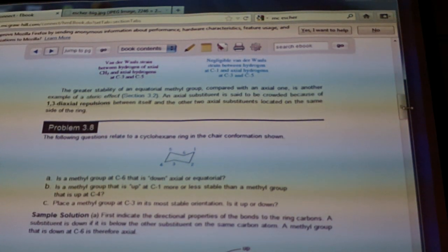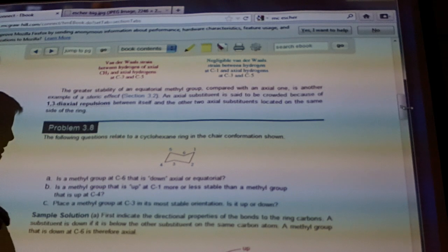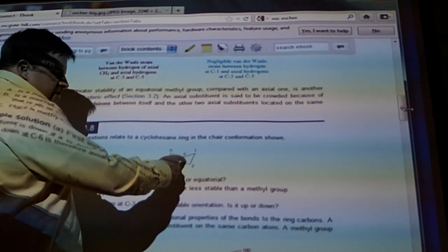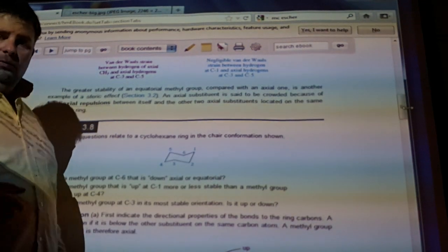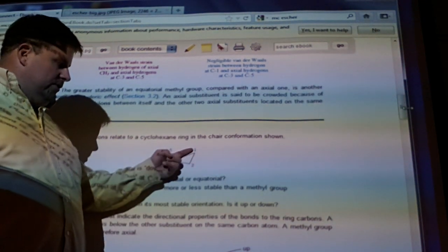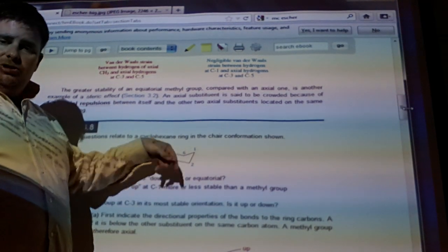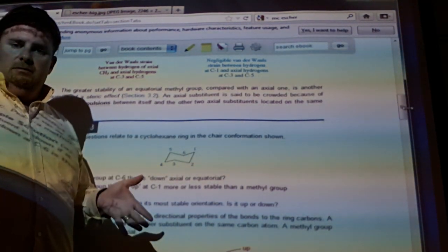So let's look at A. The methyl group at C6, so I'll change it back now, that is down, axial, or equatorial. So if it's pointing down, I've got one that's pointing down here from C6 and one that's pointing equatorial. Which one's down? Now, even though this is equatorial, the other one's pointing down, so that means that the down position is going to be the methyl group.